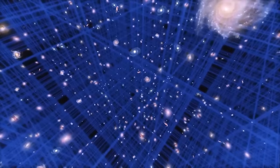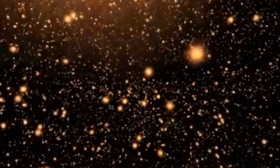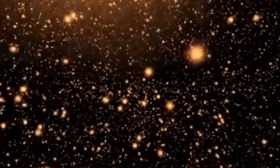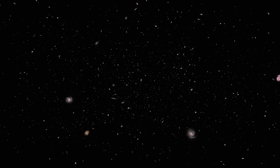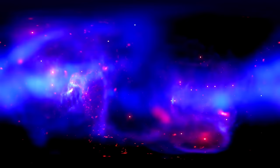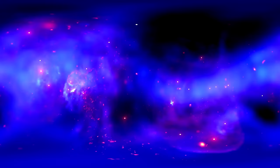During the inflationary epoch, the universe expanded exponentially, driven by a hypothetical field called the inflaton. This expansion stretched and flattened the fabric of spacetime, leaving a lasting imprint on the universe's large-scale structure. It also introduced the concept of vacuum energy - a form of potential energy associated with the vacuum of space itself. As the universe expanded and cooled, the vacuum energy manifested as density fluctuations, providing the seeds for the formation of cosmic structures.